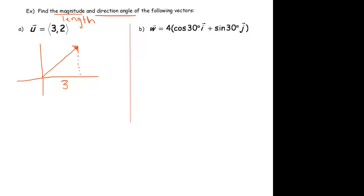So, that has a length of 3, that's the x component, and the y component has a length of 2. And so, to find the magnitude, the magnitude is the length of that vector. So, again, this is vector u.